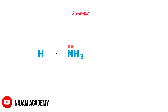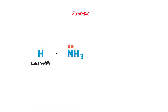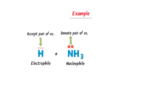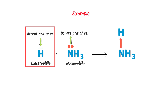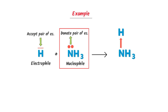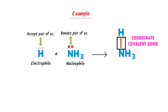Let me teach you one real example. Consider hydrogen ion and NH3. We know that hydrogen ion has a vacant orbit, so it is an electrophile because it can easily accept a pair of electrons. On the other hand, there is one lone pair of electrons present with NH3. Therefore, NH3 will donate one pair of electrons to hydrogen ion to form ammonium ion. Listen carefully: hydrogen ion has accepted one pair of electrons and formed a coordinate covalent bond — thus it is an electrophile. While NH3 has donated one pair of electrons and formed a coordinate covalent bond — thus it is a nucleophile. Also remember that the arrow represents a coordinate covalent bond, and the direction of the arrow represents the flow of electrons from nucleophile to electrophile.